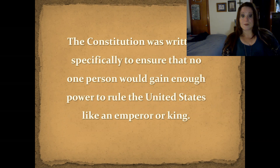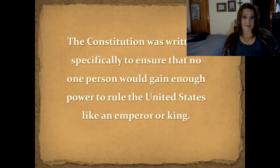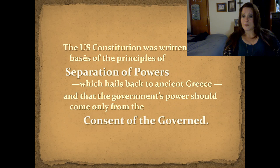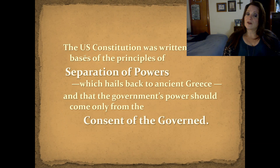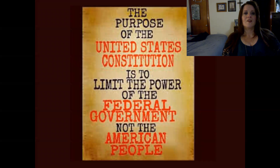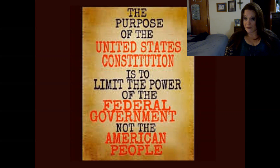The U.S. Constitution was written specifically to ensure that no one person would gain enough power to rule the United States like a king or an emperor. The U.S. Constitution was written specifically on the basis of the separation of powers, which hails back to ancient Greece, and that the government's power should only come from the consent of the governed. The purpose of the U.S. Constitution is to limit the power of the federal government, not to limit the power of the people.